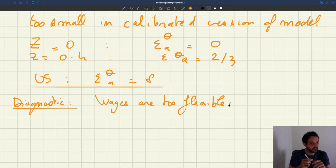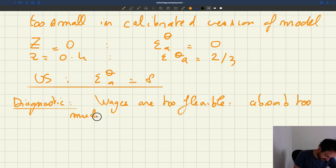Similarly, when productivity falls, which normally would lead firms to hire much less, now wages fall a lot. And so again, the incentive of firms to hire fewer workers are not very strong. So they don't really change their behavior too much. The wages absorb too much of productivity fluctuation.